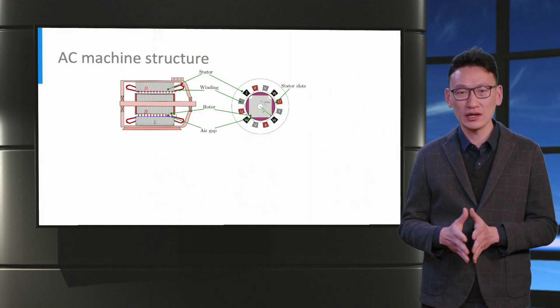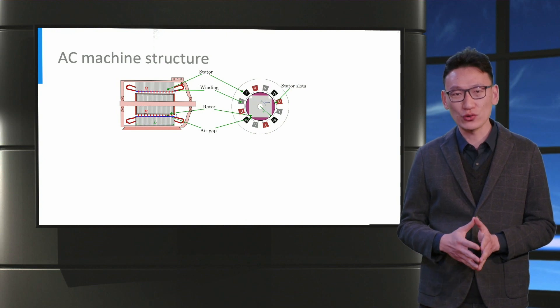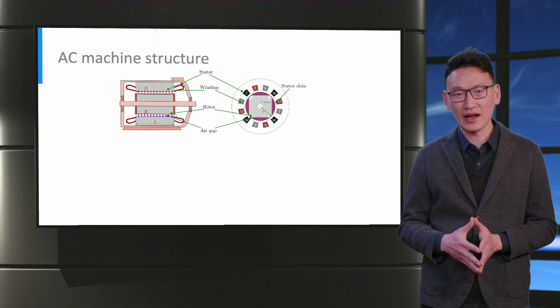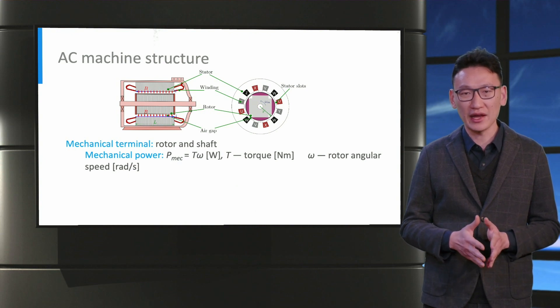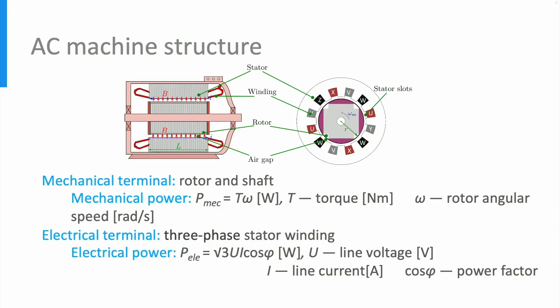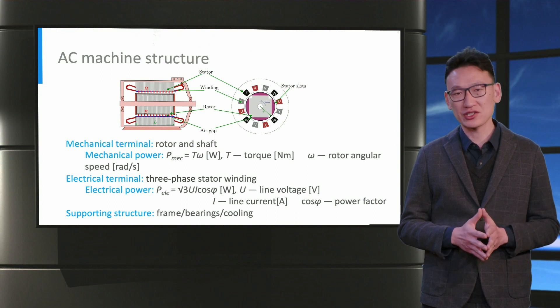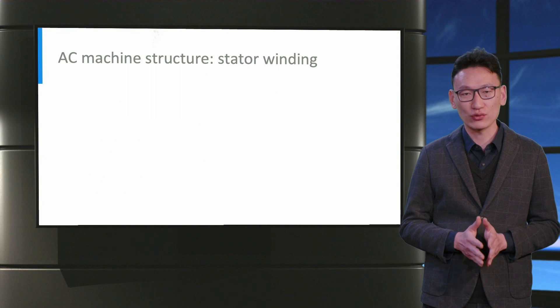Let's take a look inside an electrical machine. Physically, an AC machine comprises a stator, a set of stator windings, a rotor, and air gaps. There are two power terminals in an AC machine. The mechanical terminals are the rotor and the shaft, which provide mechanical power calculated as torque multiplied by the mechanical angular speed of the rotor. The electrical terminal is the three-phase winding, and the associated power is calculated from the three-phase power equation: root 3 times line voltage V multiplied by line current I and power factor cos phi. In addition to the main components, the supporting structure including the frame, bearings, and cooling system are needed.